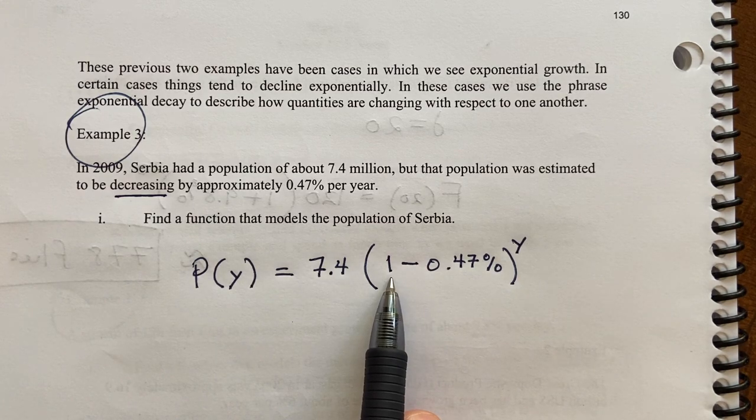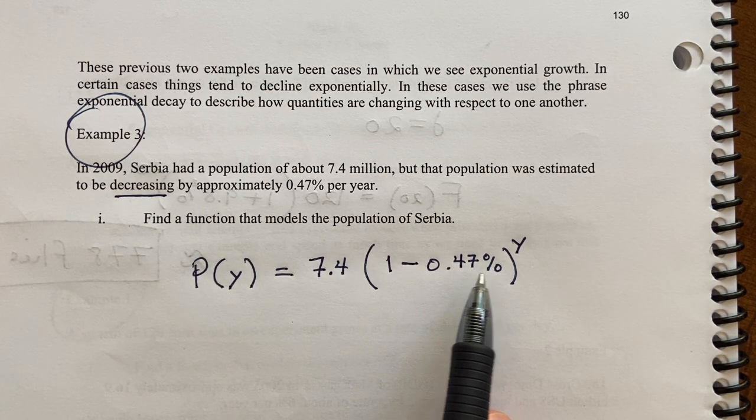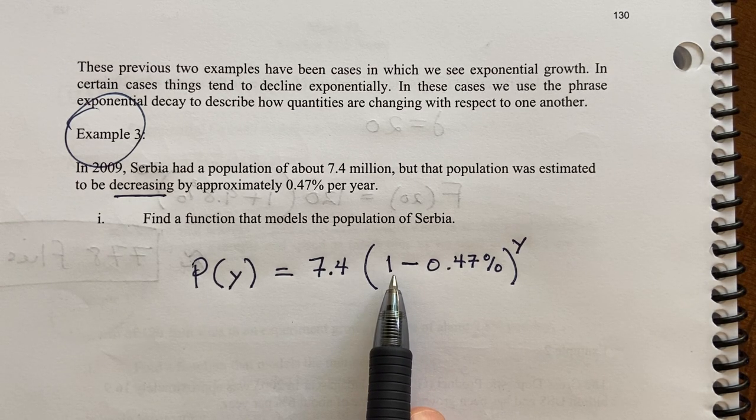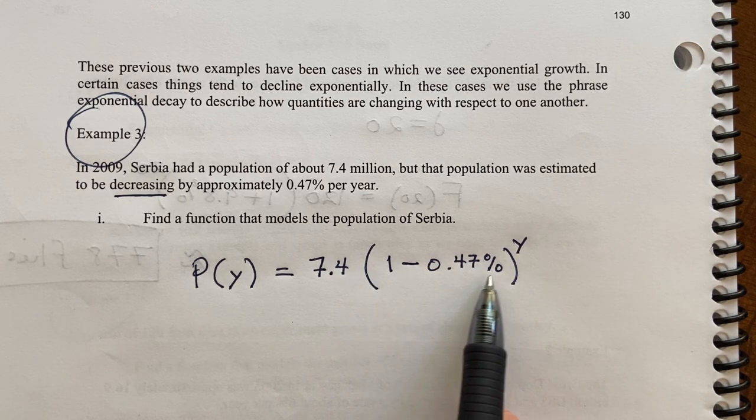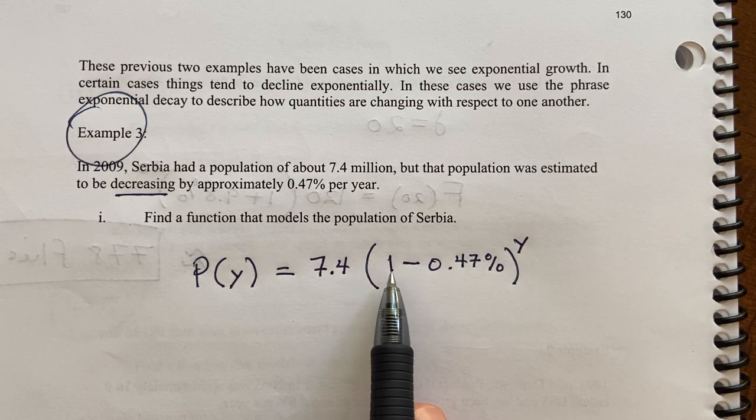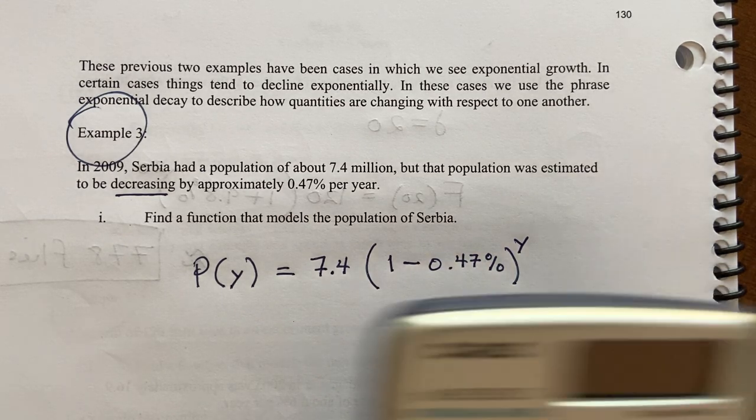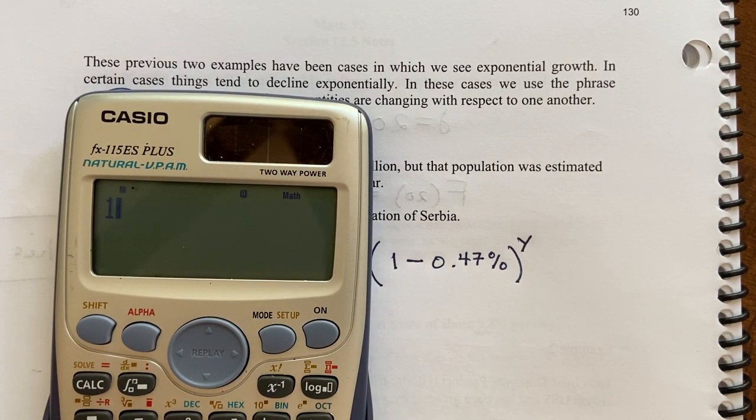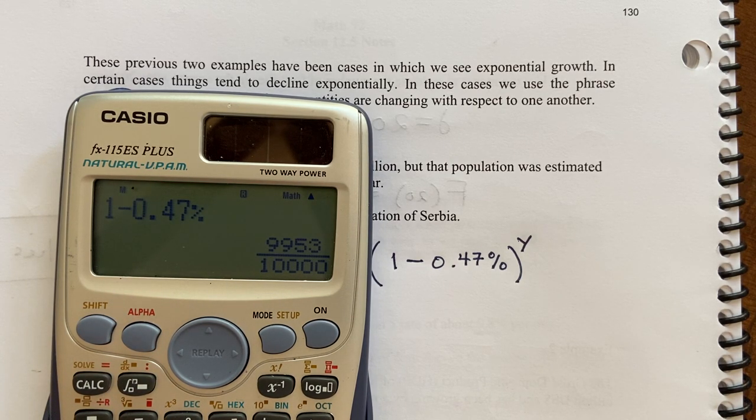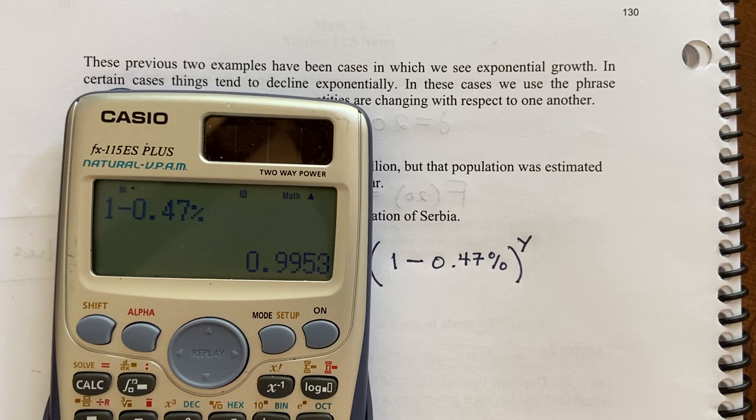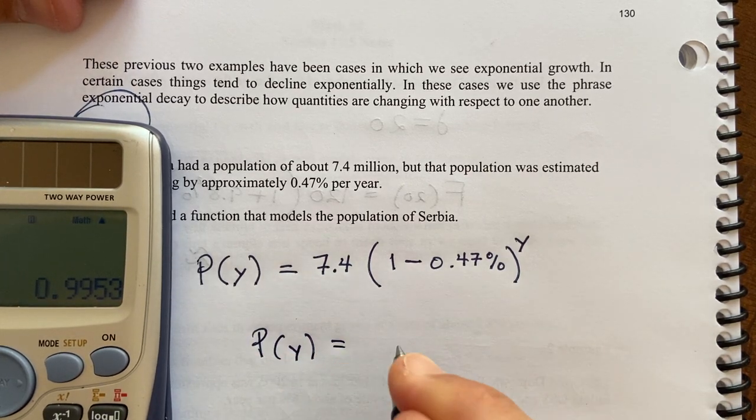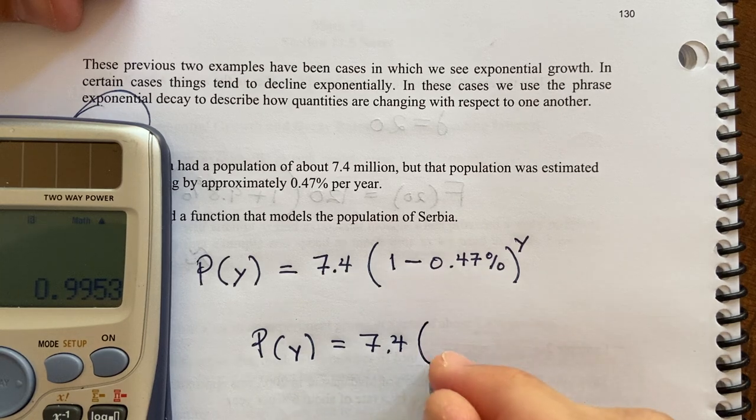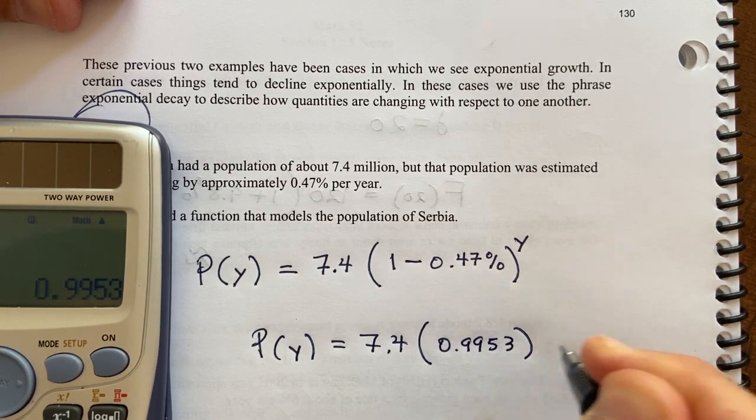It's minus because of the decrease. It's decreasing, so I'm subtracting from 1 this percentage. If it was 1, then the population would be stable. For numbers above 1, the population's growing. For numbers below 1, the population would be decreasing. So this is a number slightly below 1. If I type in 1 minus 0.47 percent, that's this number just below 1. So P(Y) equals 7.4 times 0.9953 raised to the Y.